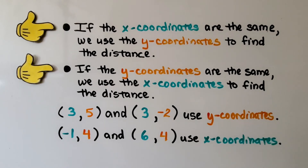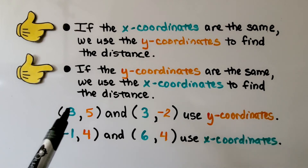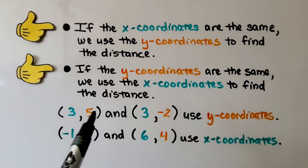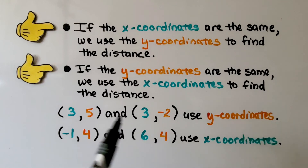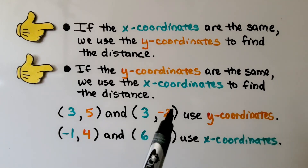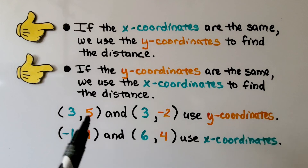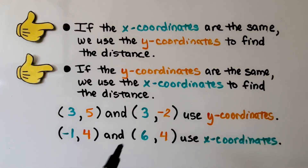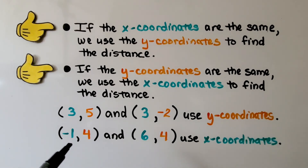If the x-coordinates are the same, we use the y-coordinates to find the distance. If the y-coordinates are the same, we use the x-coordinates to find the distance. For this pair, both x-values are three, so we use the y-coordinates to find the difference. For the other pair, the x-coordinates are different but they share the same y-coordinate, so we use the x-coordinates — negative one and six — to find the distance.